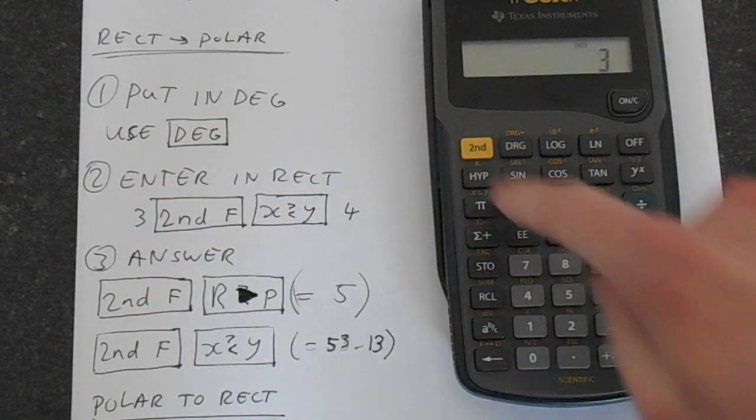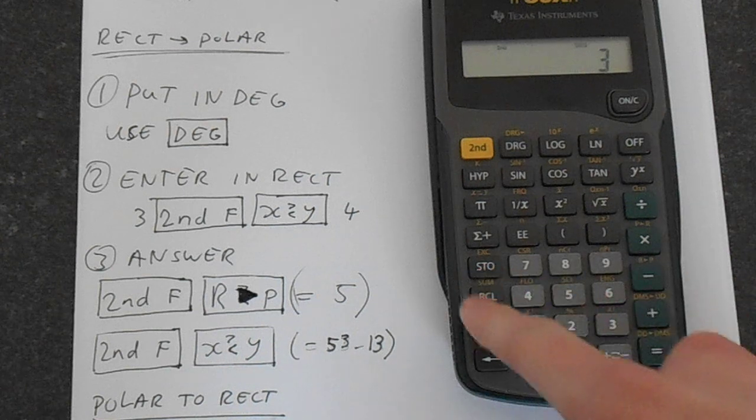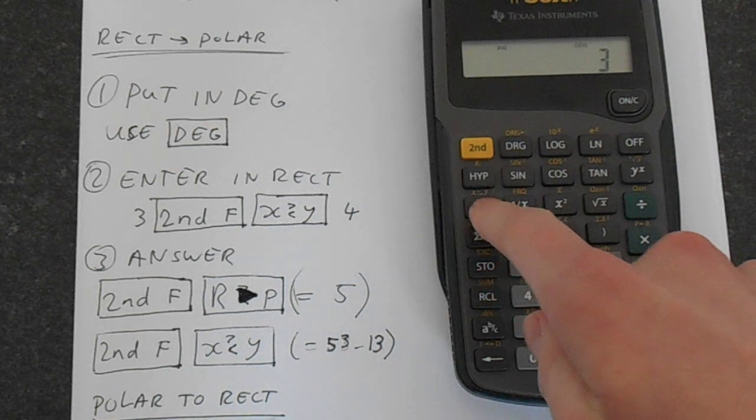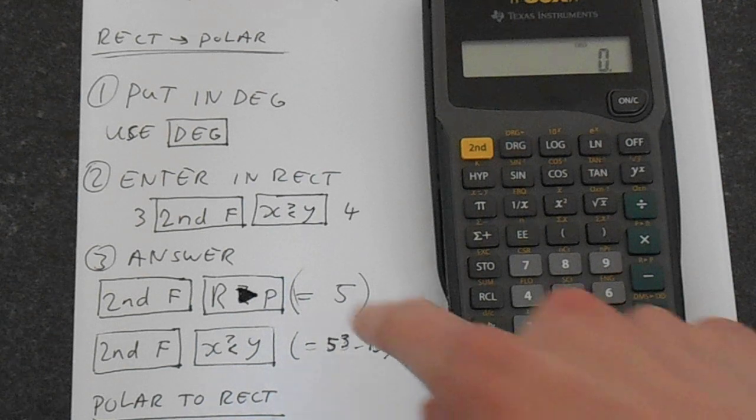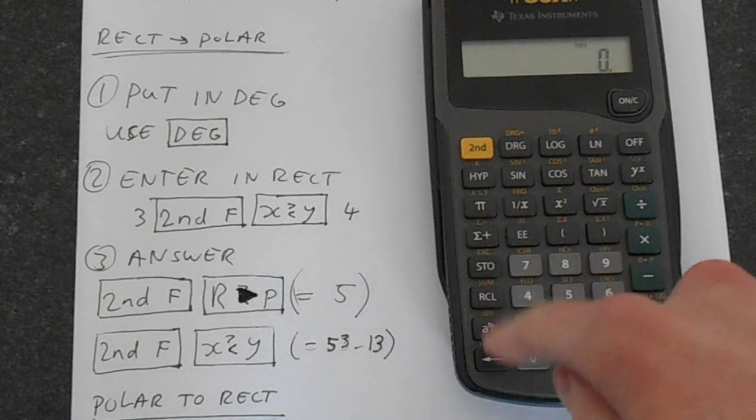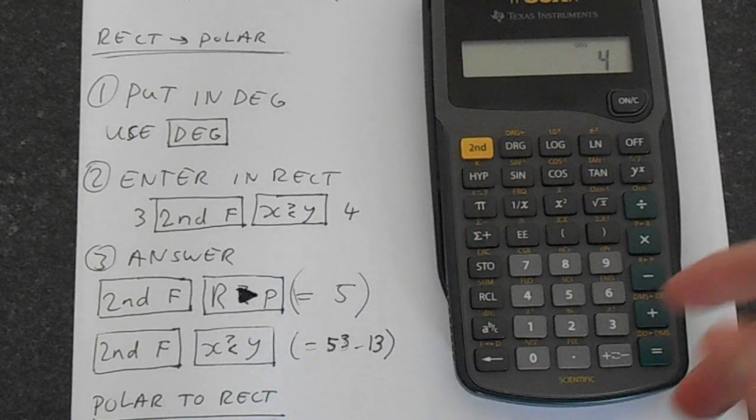So just put in 3, second function, you've got this x, y button above the pi. So press that, and then 4. So we've entered the number 3, 4, essentially.